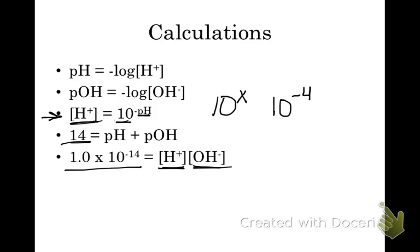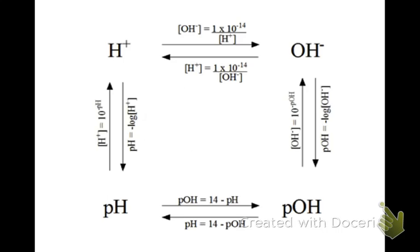When entering 1.0 × 10⁻¹⁴ in your calculator, use the EE button — just press 1, EE, negative 14. You don't need to type the times 10 separately. There's also a simple formula map to help you figure out which calculation to use. Eventually these will become more natural to you, but this map is a helpful reference when you're starting out.